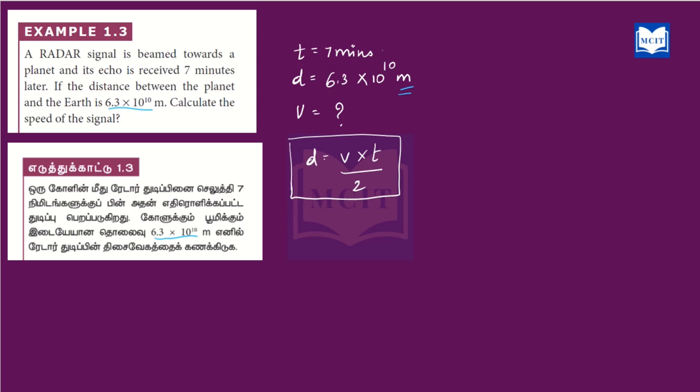We know the distance formula. The radar formula is: distance d equals v into t divided by 2. Students, understand which method to use for distance. The formula depends on the given information. For the radar method, use this formula — remember it and substitute. So d equals v into t divided by 2.